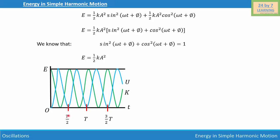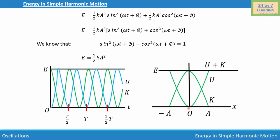At time T/2, the potential energy is zero and the kinetic energy is at its maximum value. The same pattern repeats at T and 3T/2. We can also plot KE and PE against displacement, from −A to +A, where both appear as parabolas. Their sum is the horizontal line E = KE + PE, and this is how we define energy in simple harmonic motion.